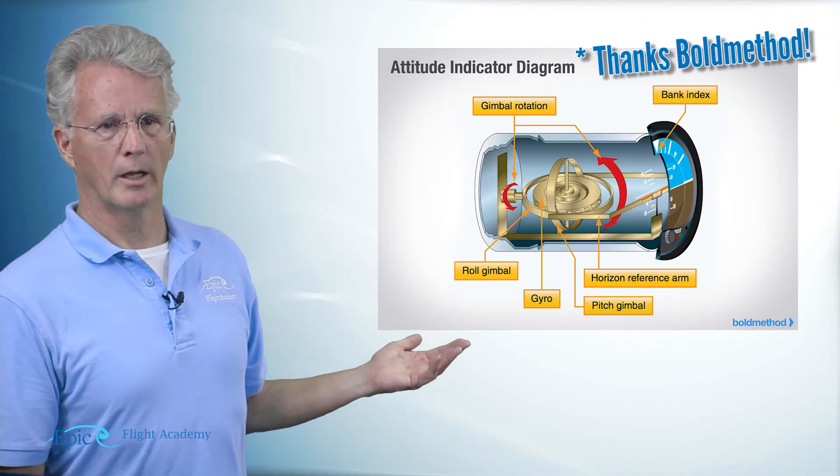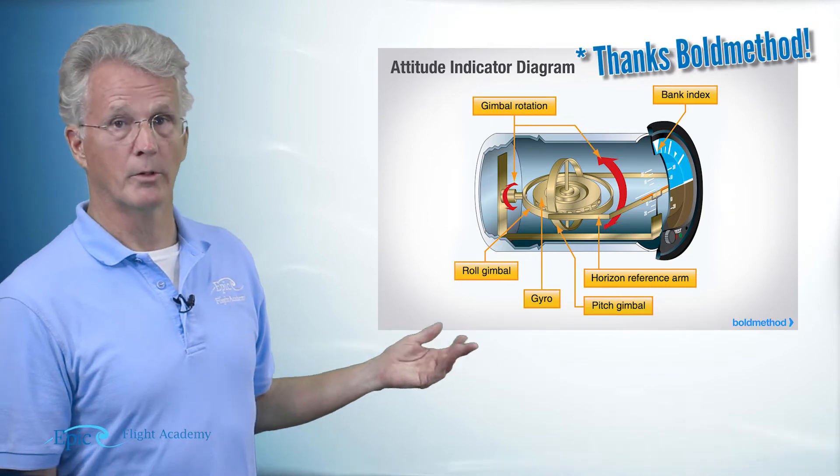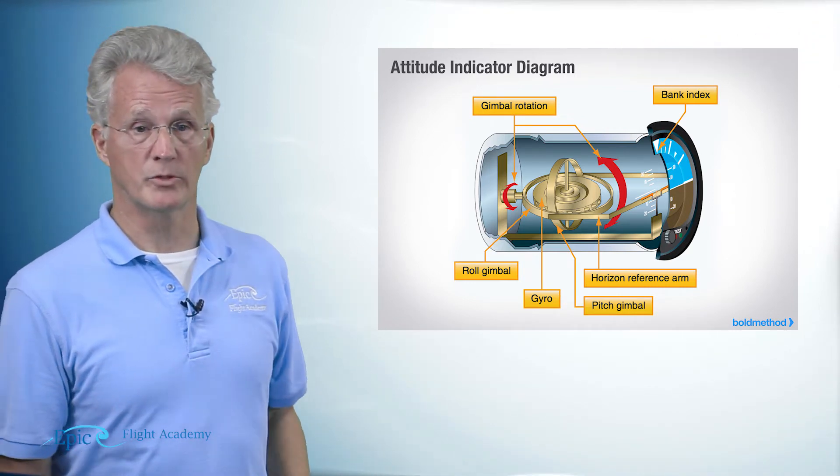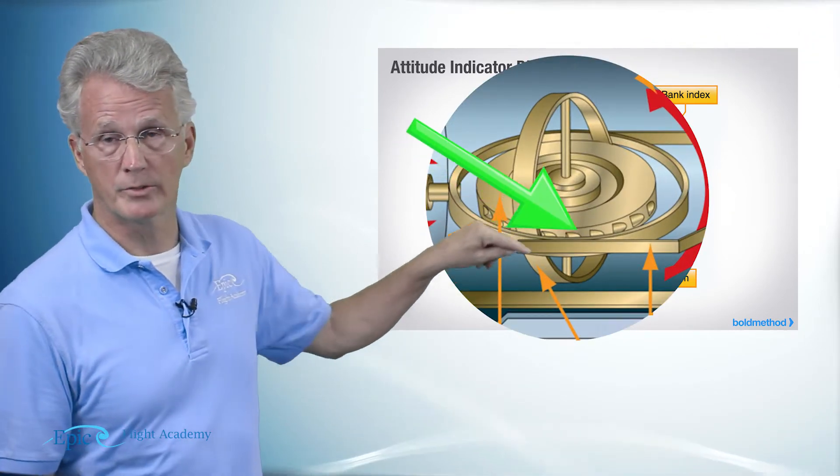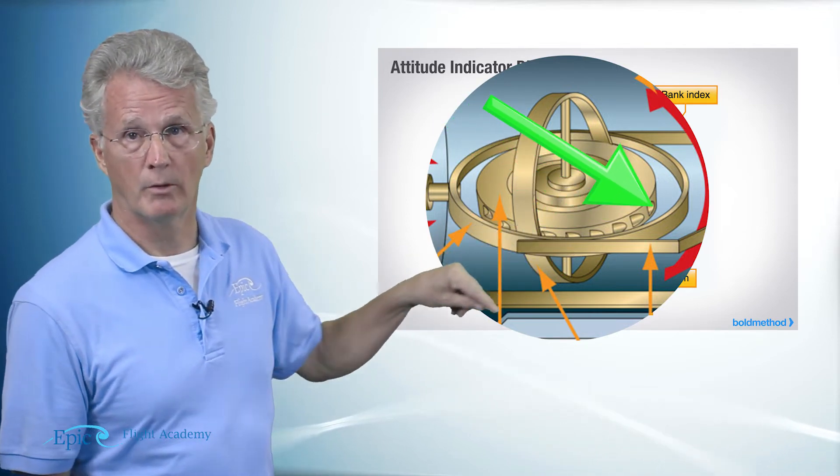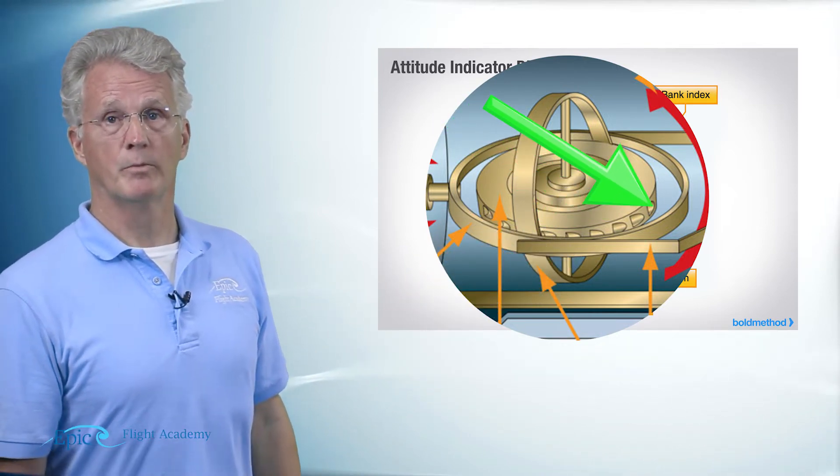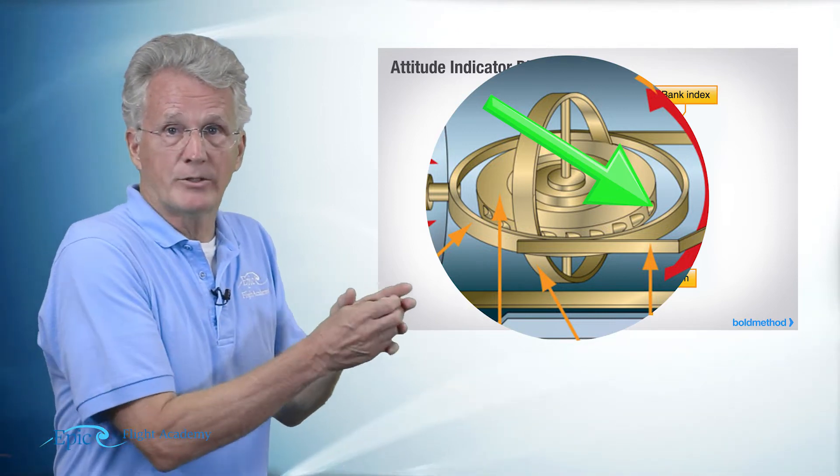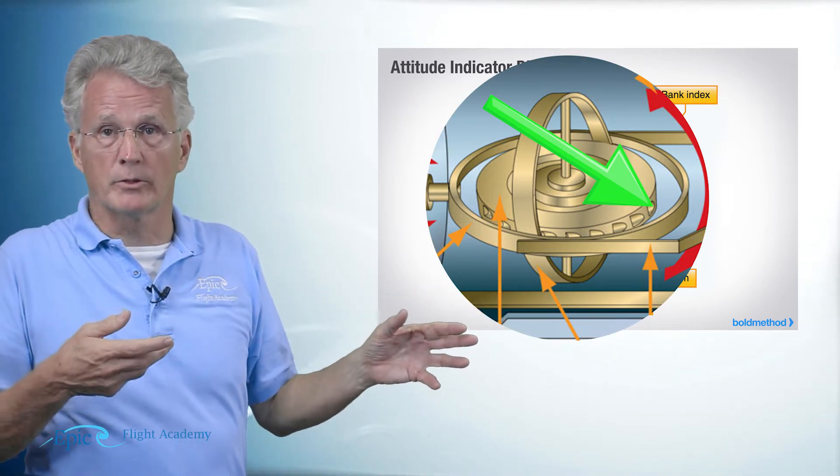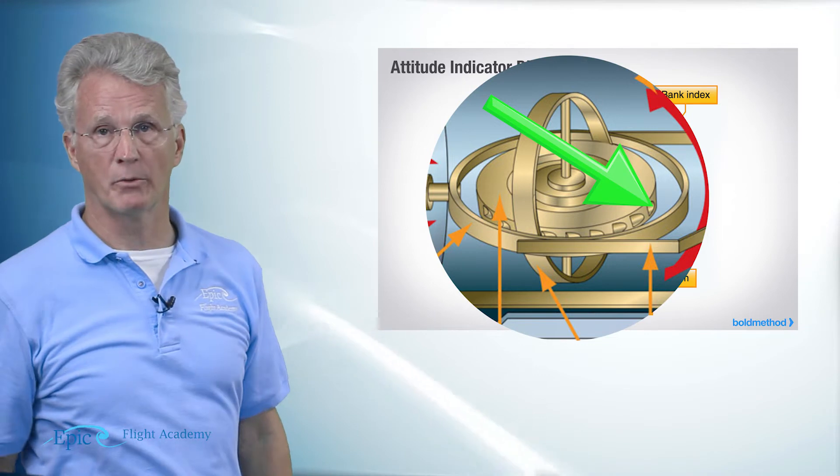So here's our cutaway of the attitude indicator. Remember it's powered by the vacuum system. Do you see the little buckets on the ridge around the edge of this gyro? That's where it catches the air that's being sucked across it and spins very rapidly.